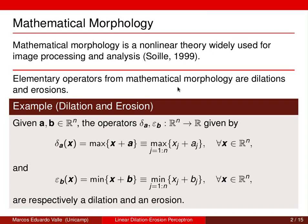In this talk we focus on two particular examples of dilation and erosion. Given A, a dilation delta_A from R^n to R is an operator given by the maximum of x plus A, where the addition is computed component-wise. Similarly, an erosion epsilon_b of x is given by the minimum of x plus b.